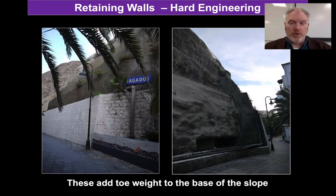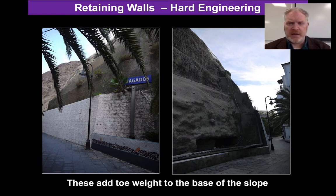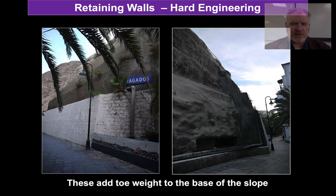A retaining wall again adds toe weight and holds the slope back. These tend to be big and strong, and this is perhaps some of the hardest of hard engineering.